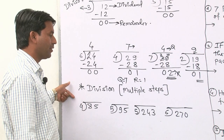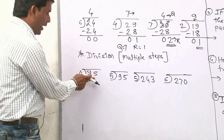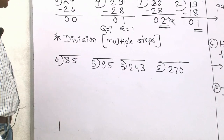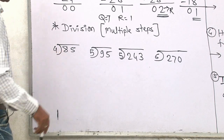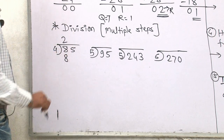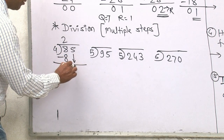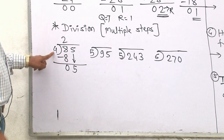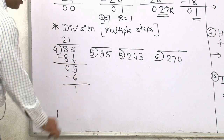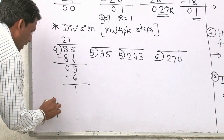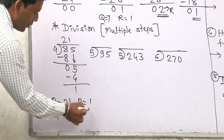Now we will see division with multiple steps. Let us see: 85 divided by 4. First of all, I will divide 8 by 4. 4 twos are 8, so 8 minus 8 is 0. Now we bring down the 5. After that, 4 ones are 4. 5 minus 4 is 1. So your quotient is 21 and your remainder is 1.